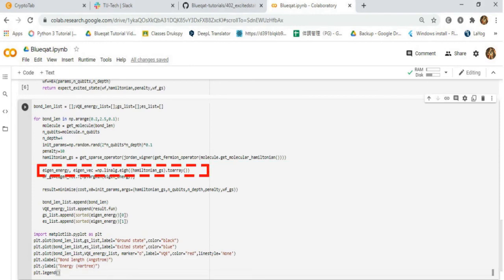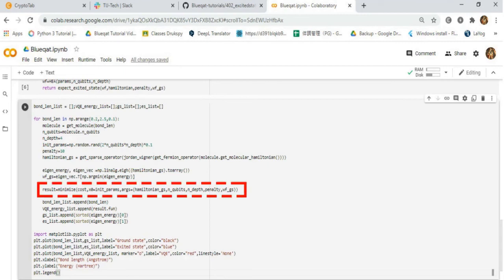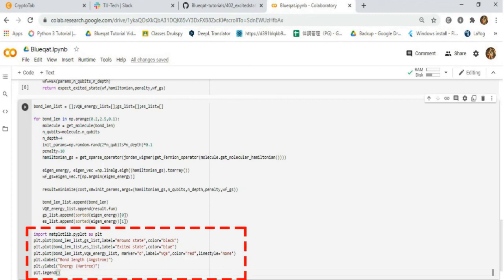Then obtain the eigenvalues and eigenvectors using classical calculation and also obtain the wave function of the ground state. Then next run the optimization. Then record the bond length, VQE ground state, and first excited state results. Then plotting the results. This will take a few minutes.